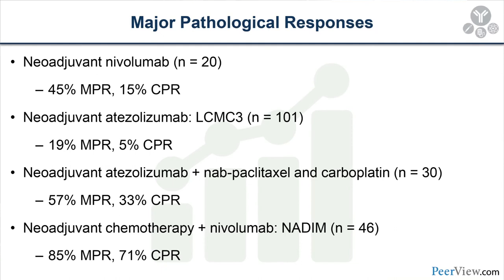To summarize major pathologic response rates across the major trials: neoadjuvant nivolumab — 45% major path response, 15% complete path response; NEOSTAR single-agent nivolumab — somewhat lower; LCMC3 neoadjuvant atezolizumab — 19% major path response, 5% complete path response. For combination therapy: atezolizumab plus nab-paclitaxel/carboplatin — 57% major path response, 33% complete path response in 30 patients; and NADIM — 85% major pathologic response rate and 71% complete pathologic response rate.